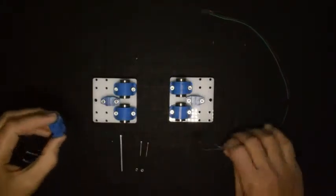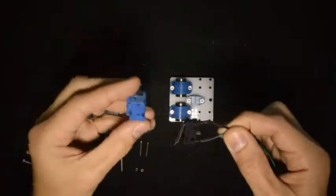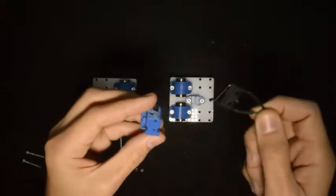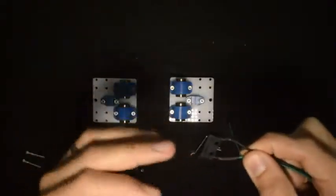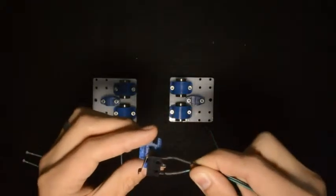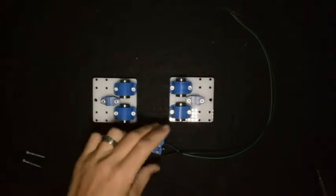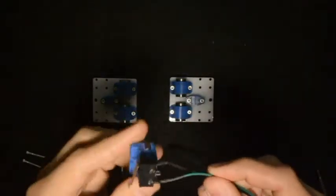First, we will take the end stop switch and the printed component and bolt it onto the printed component with the M2 screws so that the switch is at the bottom, like that. Now the end stop switch looks like this.